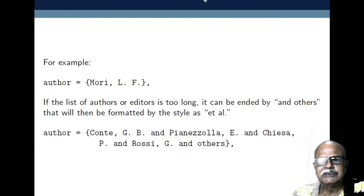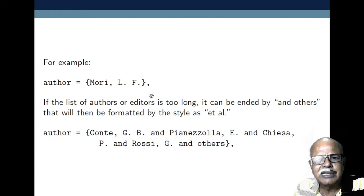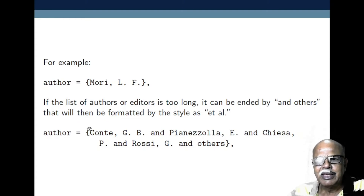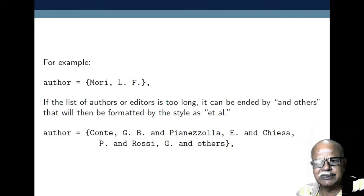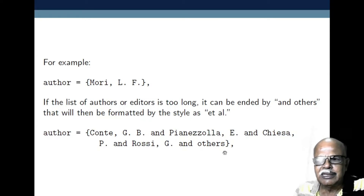For example, if you have only one author, it has to be written as: author = {surname, followed by other names}. In the Indian context, for Ramesh Kumar Gupta, it would be written as R.K. Gupta, or Gupta, comma, R.K. If the list of authors is too long, it can be ended by 'and others', and this will be formatted by the style as 'et al.'.